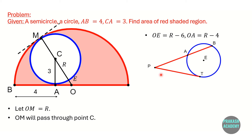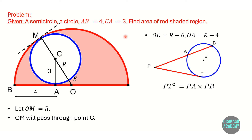Now I will use a theorem from circle geometry. This theorem states: if from any external point P you draw a tangent PT to a circle, and also a secant line PAB intersecting the circle at points A and B, then PT squared equals PA times PB.